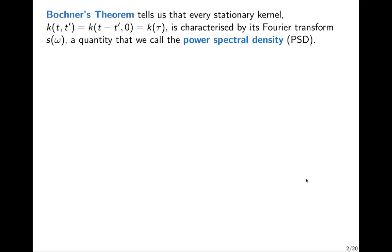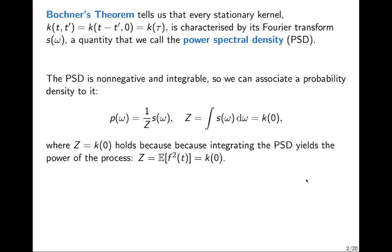If you remember from last time, Bochner's theorem tells us that every stationary kernel — which means the kernel is just a function of the difference between the locations of the two data points — is characterized by its Fourier transform, which we call the power spectral density. The power spectral density is non-negative and integrable, so we can associate a probability density to it.